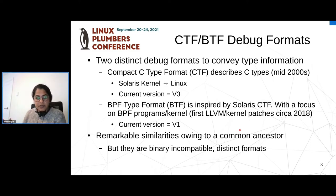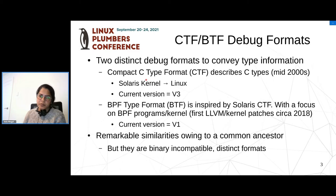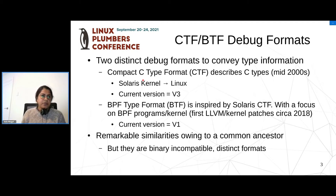CTF and BTF debug formats are two distinct formats. They came into being to fulfill the need of conveying minimal basic type information. CTF stands for compact C type format. It came into being in Solaris kernel and later was ported to Linux. The current version V3 is the V3 version of Linux code. BTF stands for the BPF type format, and it also came into being for the same need — to represent type information for the kernel. The current version is V1.